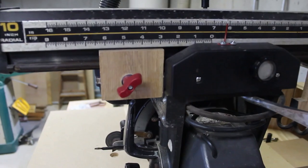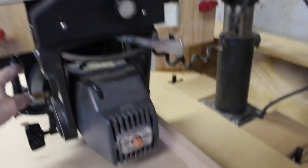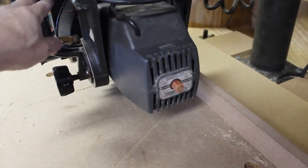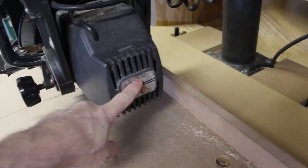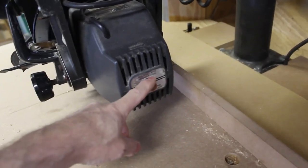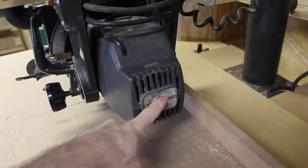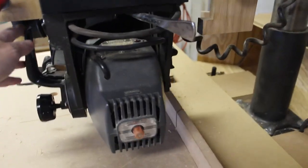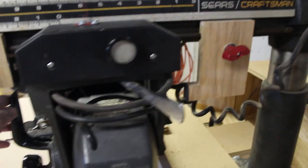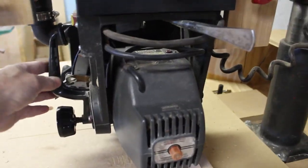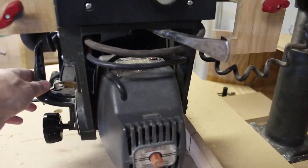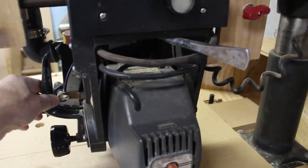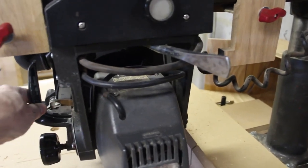The idea behind the stop blocks is so if I can get a drill chuck to mount on the auxiliary shaft that doesn't have an excessive amount of runout, I can use it for mortising and set the stop blocks to make the mortise exactly the size I need.